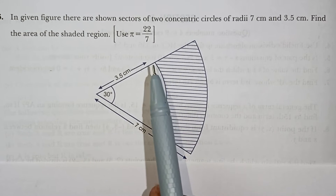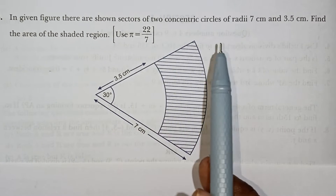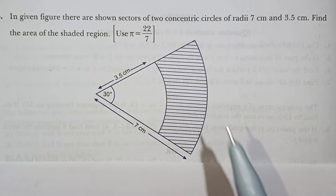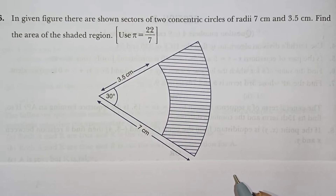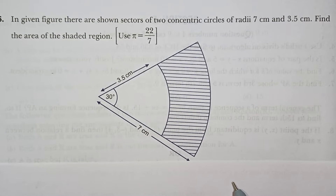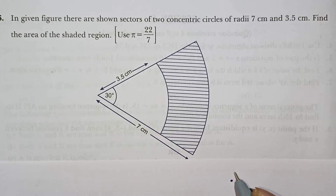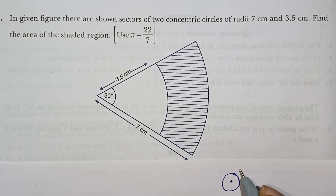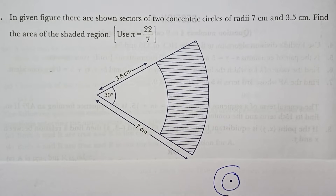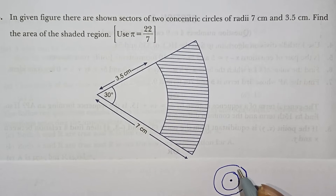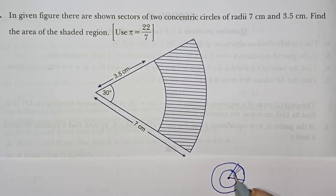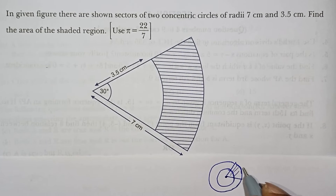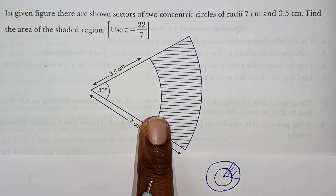So, in this case, there are concentric circles. In the center, there are two circles — these are called concentric circles. There are two radii connected to the area. This is the diagram.